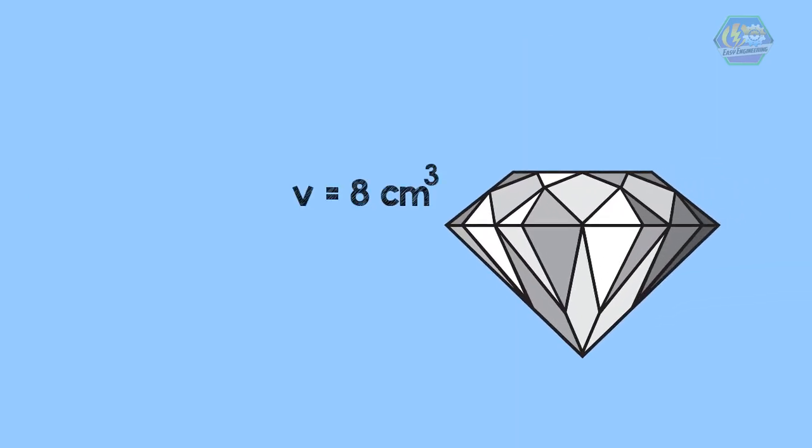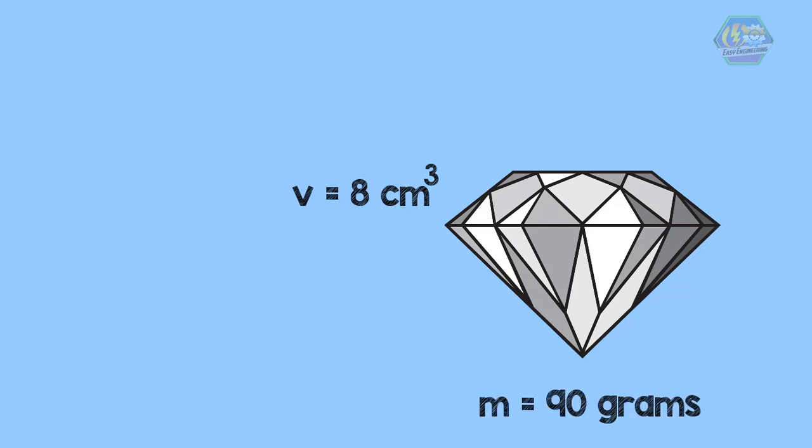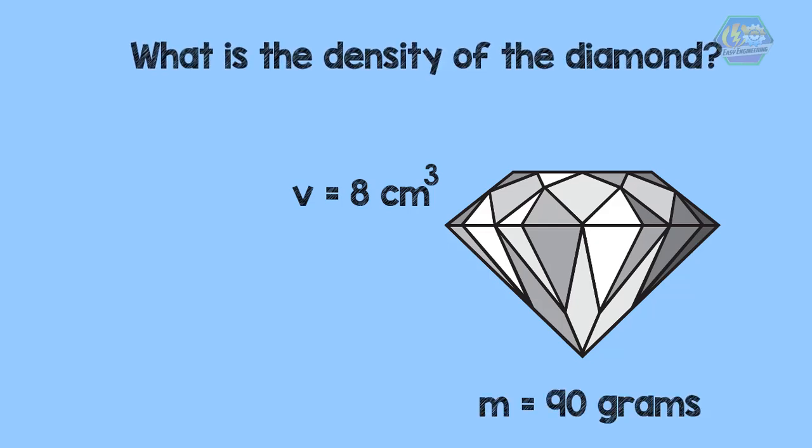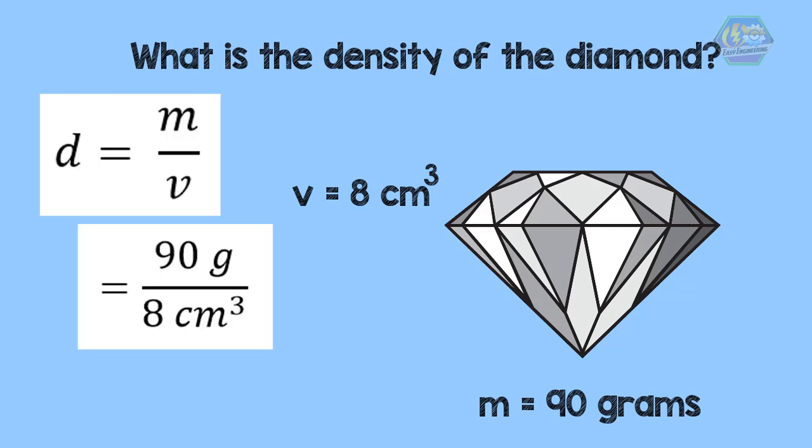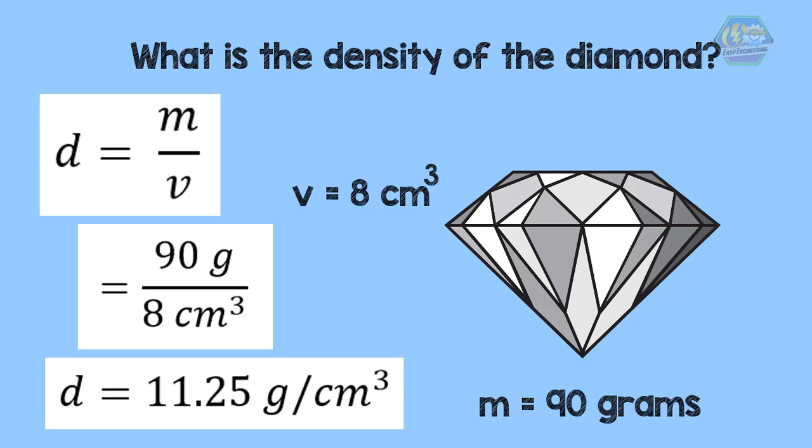Now for another example, let's say you have a diamond with a volume of 8 cm³ and a mass of 90 grams. What is the density of the diamond? So the density of the diamond is 11.25 grams per cubic centimeter.